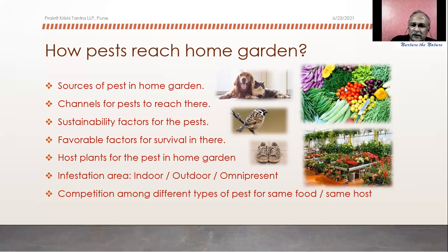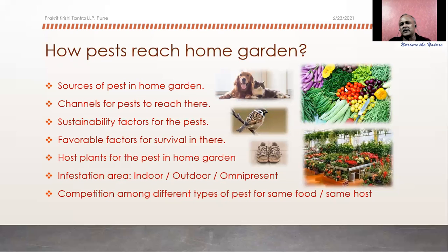These are the ways pests reach our garden. Either they come along with fresh vegetables we buy from the market. We use the vegetables, consume them, and while cleaning we remove the skin or leaves and throw out the extra parts. We don't know that some insect, fungal disease spore, or insect egg may be present on the parts we are throwing. Wherever we throw them — perhaps in the dustbin or in the garden — that gives them the opportunity to start their next generation.